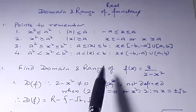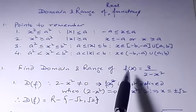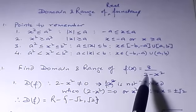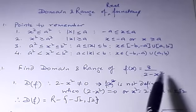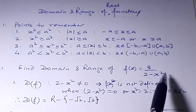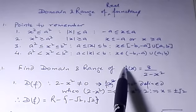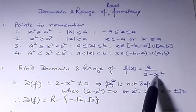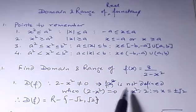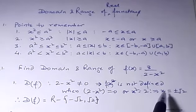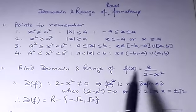Now we will find the domain and range. We have a question: f(x) = 3 / (2 - x²). To find the domain, we set the denominator not equal to zero, because if the denominator is zero, the function will not be defined. So we set 2 - x² = 0, which gives x² = 2, so x = ±√2.